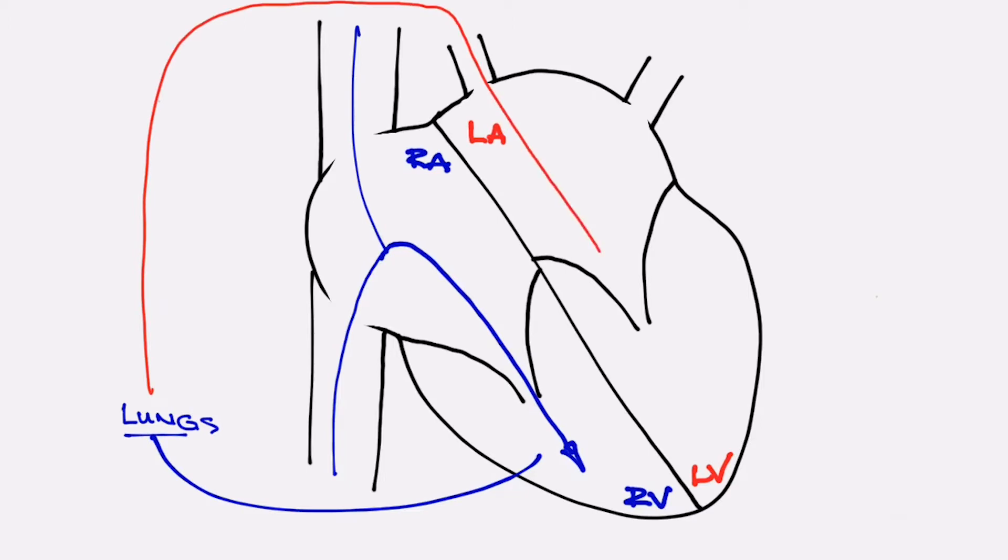In the lungs, the blue blood is oxygenated and then the oxygenated or red blood returns to the left side of the heart and in the same manner enters the top chamber on the left called the left atrium, goes through a valve into the bottom chamber called the left ventricle and as that chamber fills, it gets the message to pump and blood is then pumped to the body.